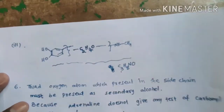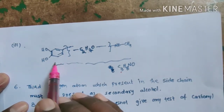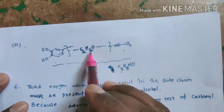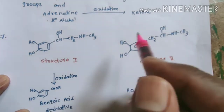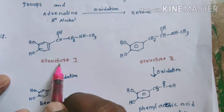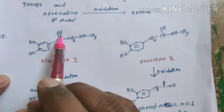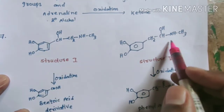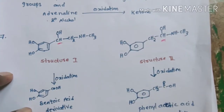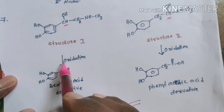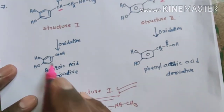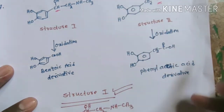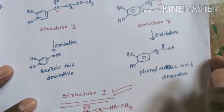Now we can write the possible structures for adrenaline. Adrenaline contains one catechol group, a methylamine group, C2H4O, and the oxygen is present as a secondary alcohol. Two possible structures are written. In both structures, the hydroxy group is present as a secondary alcohol, which gives a ketone on oxidation — unlike primary alcohol (which gives aldehyde) or tertiary alcohol (which gives neither). Structure one on oxidation gives a protocatechuic acid derivative, and structure two gives a homophthalic acid derivative. Therefore, adrenaline must have structure one.